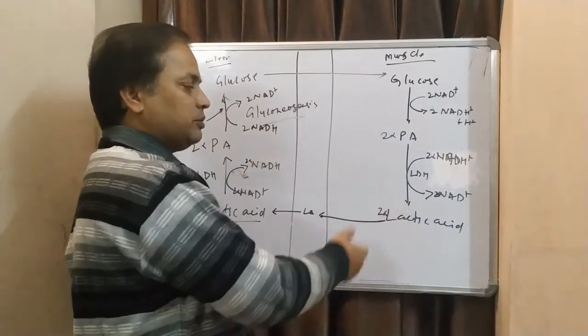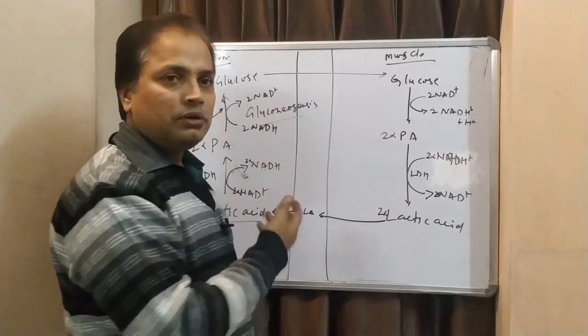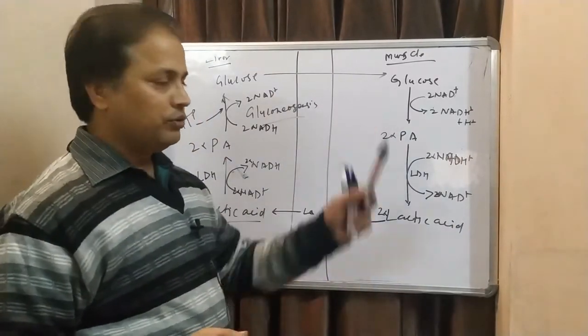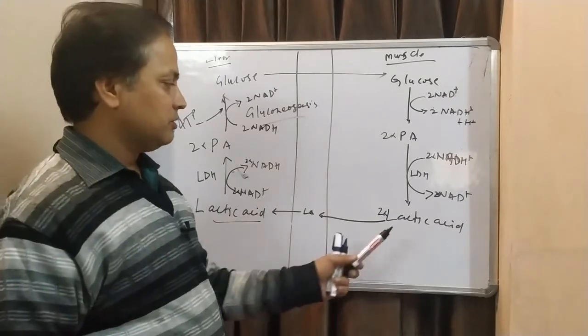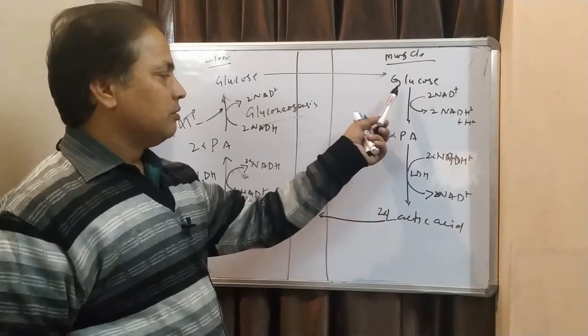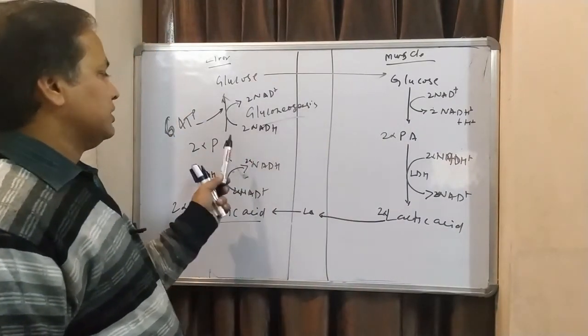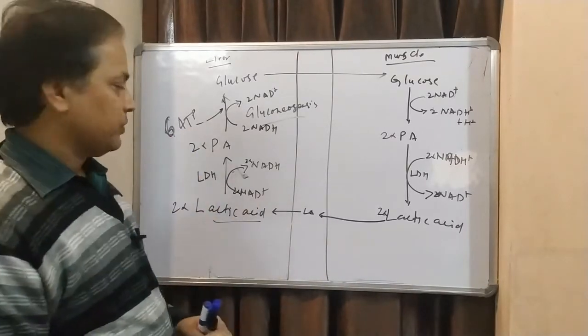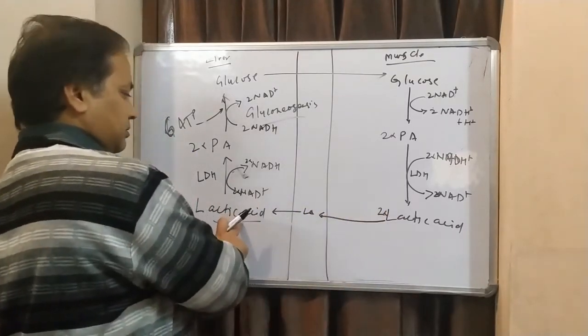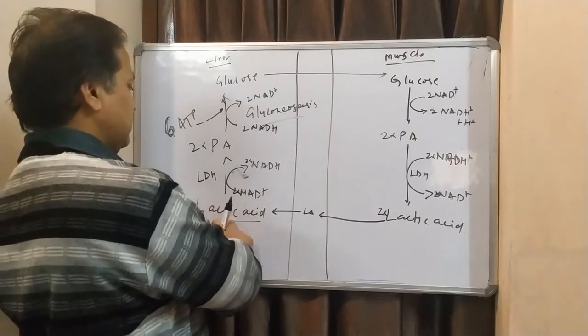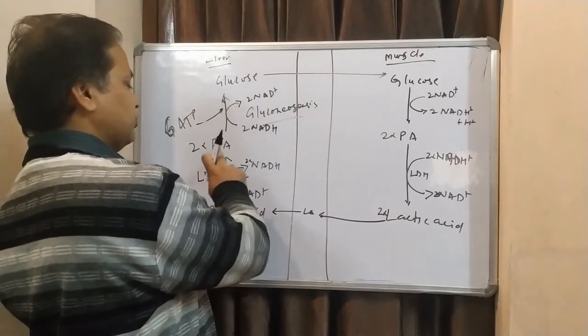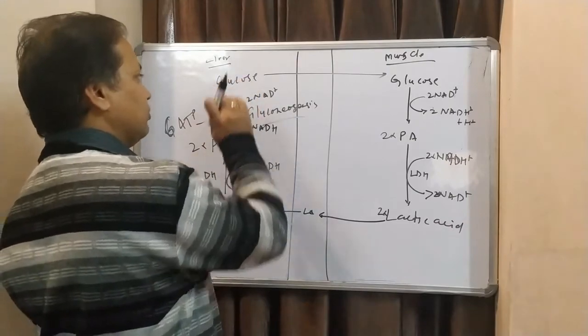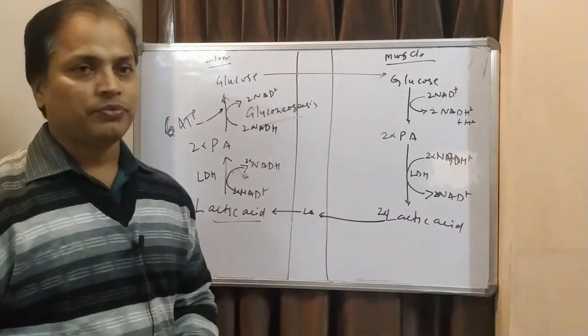Here, in case of muscle, it cannot be converted into glucose because we don't have those enzymes which can convert lactic acid into glucose, or gluconeogenic enzymes we don't have here. That's why this has to go to the liver. This lactic acid comes to liver. In liver, lactic acid is converted to pyruvic acid. Pyruvic acid is converted to glucose by normal gluconeogenesis.